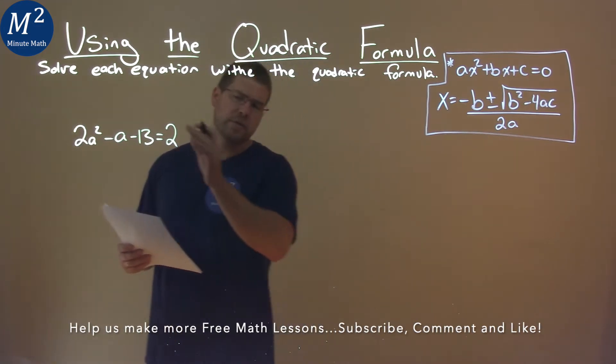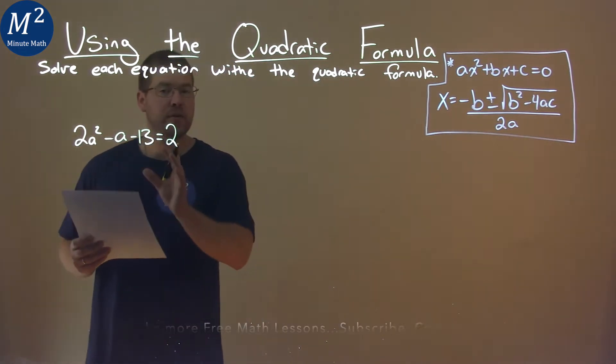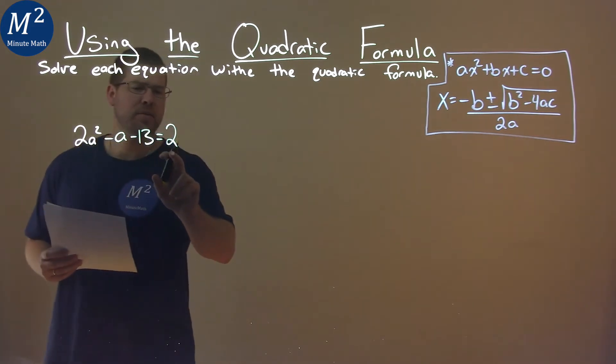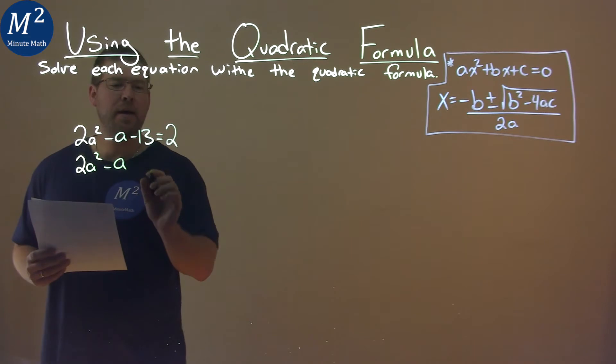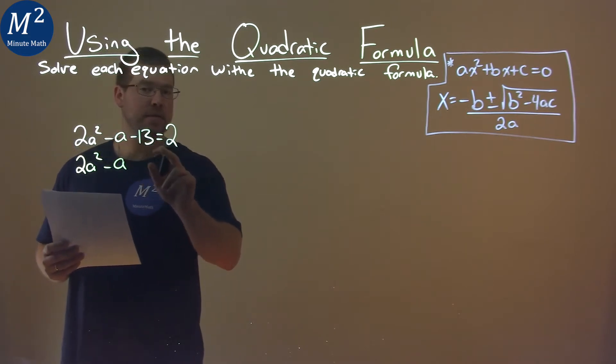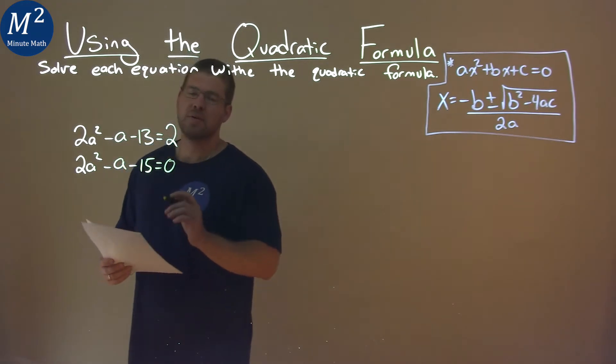One thing I first notice is I need to have my equation equal to 0. To do that, I'm going to subtract 2 from both sides, and I have 2a squared minus a, and then negative 13 minus 2 is negative 15. Now it's equal to 0.